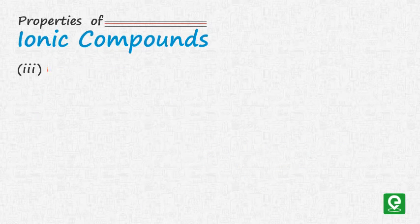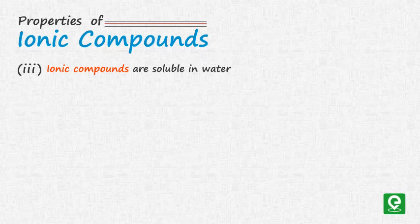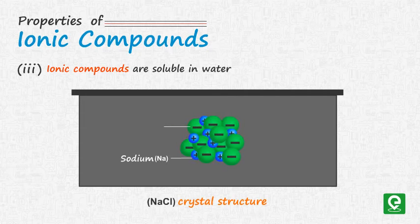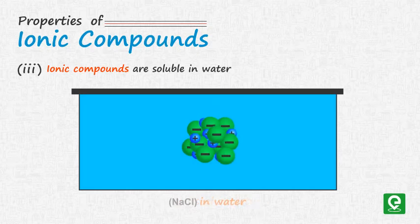Number three: ionic compounds are soluble in water. Water, being a polar compound, interacts with ions at the atomic level, causing the crystal lattice to break apart.